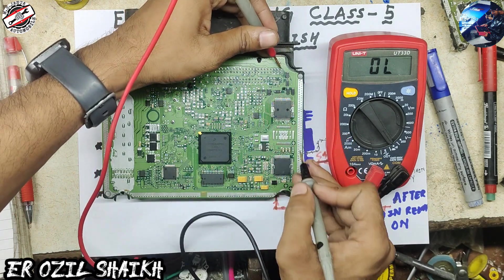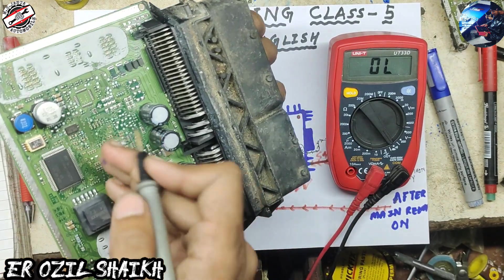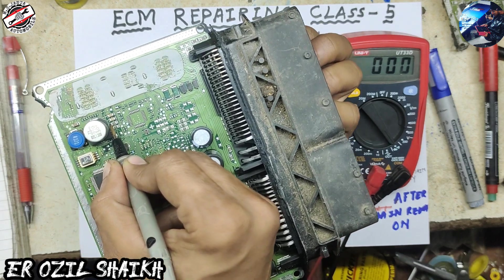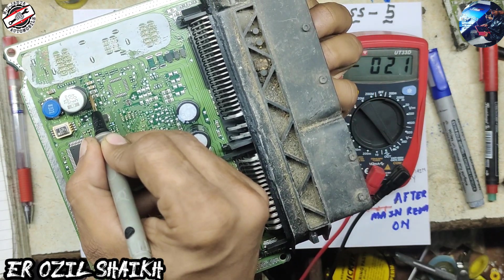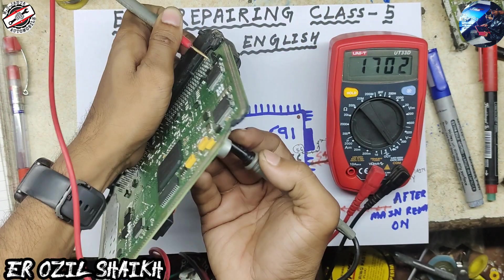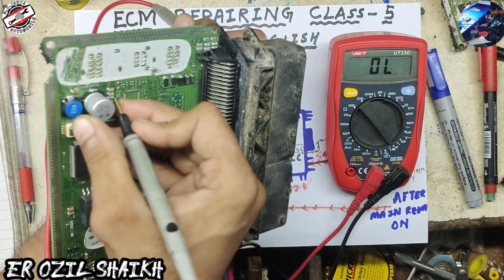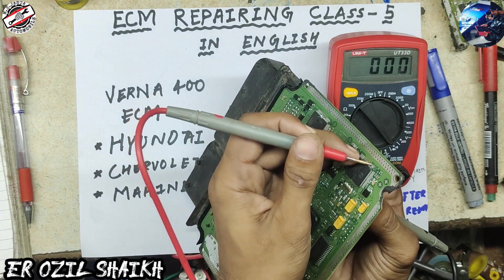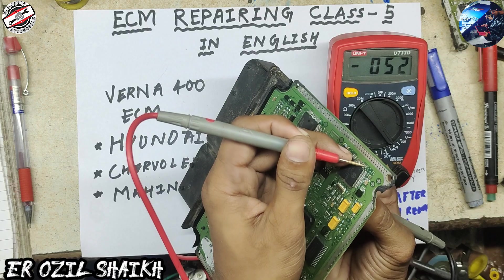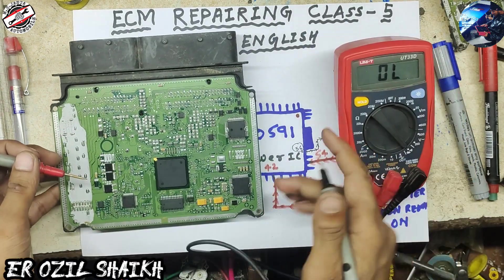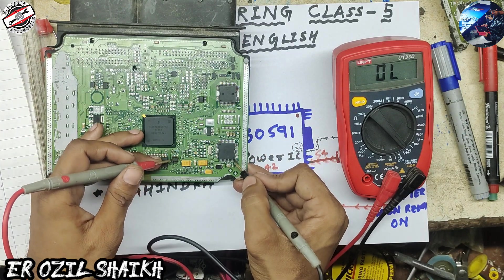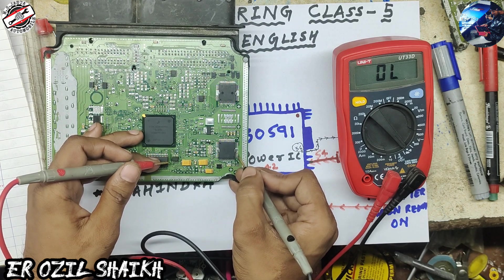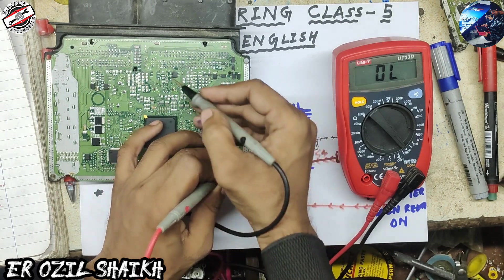Pin number 28 is here. As you can see, here is resistance 2871. The other side of this resistance goes to IC pin number 54. And here are pins 52, 53, 54, 55, and 56 — here is pin 56.